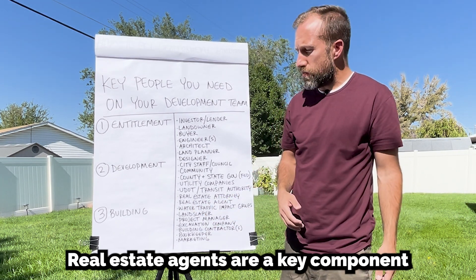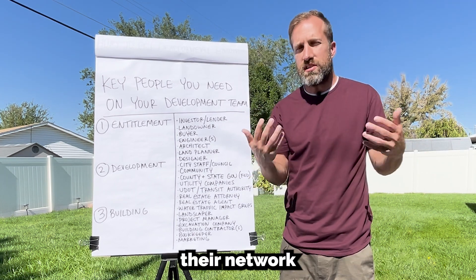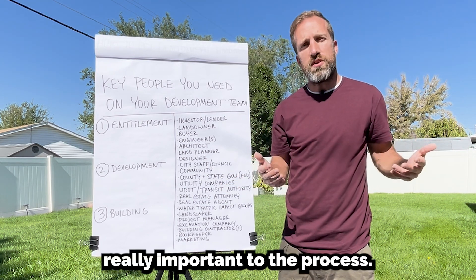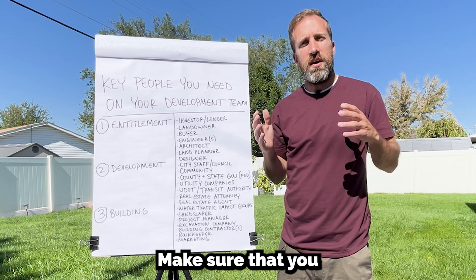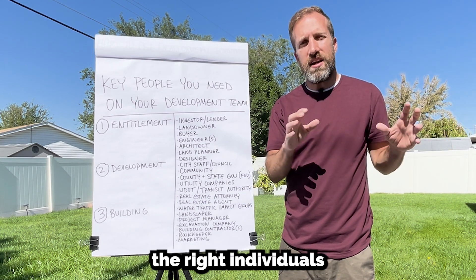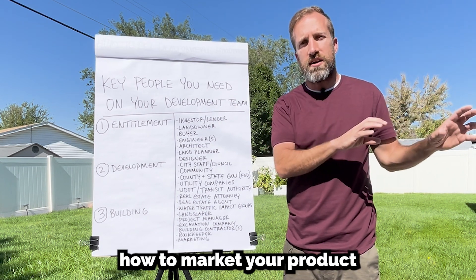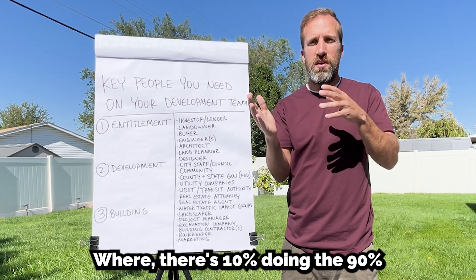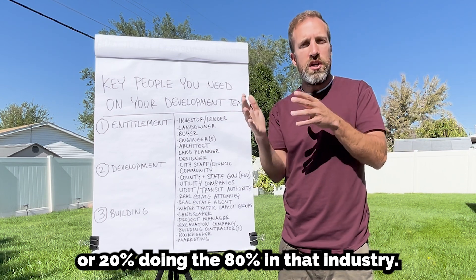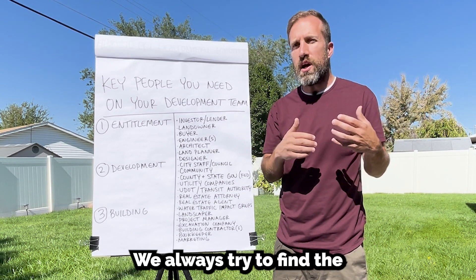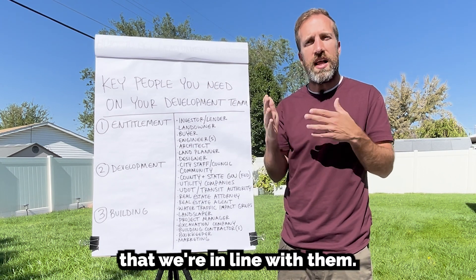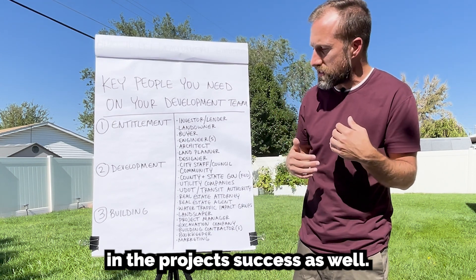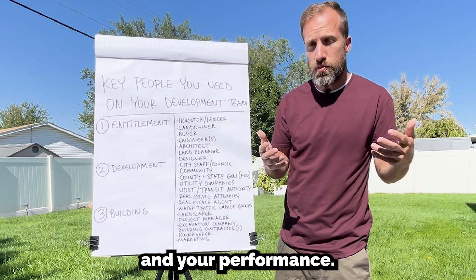Real estate agents are a key component — they're going to bring buyers through their network and help you sell your product. Make sure you find the right individuals who actually know how to market your product in that geographical area. There's always an 80/20 or 90/10 rule. We always try to find the movers and shakers and align with them, starting a marketing process that leads to their success and the project's success as well.